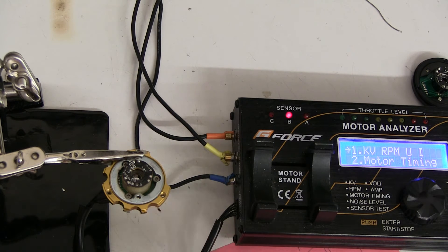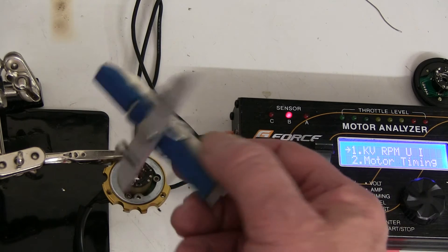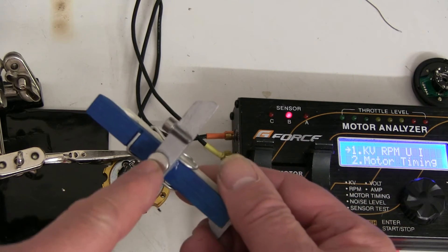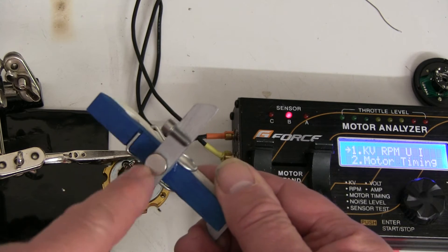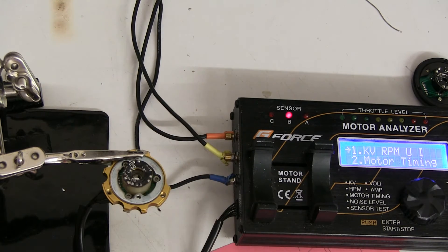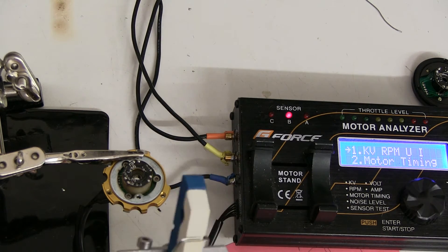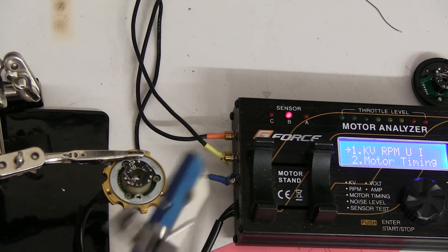A fridge magnet works well—you want a small, round magnet like this. Put it over the top of each sensor and look at the display. This one shows B.